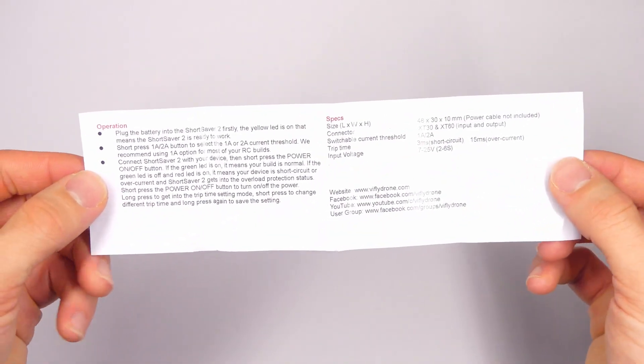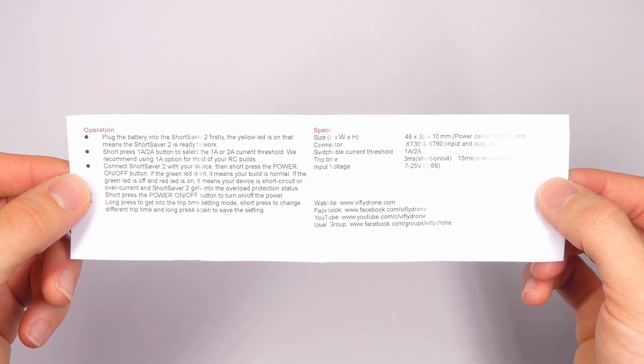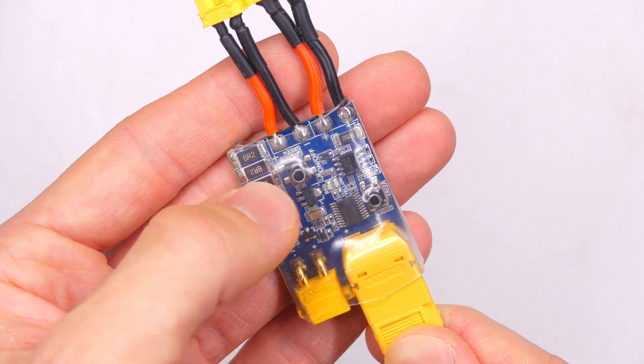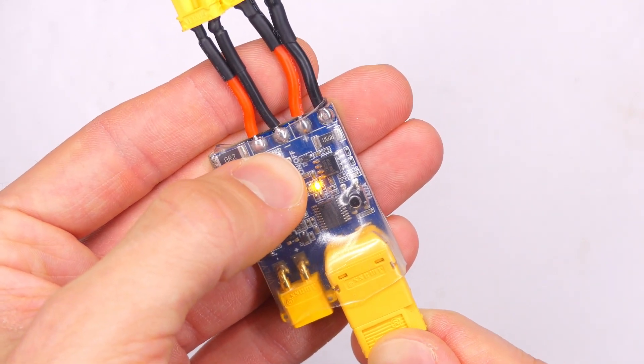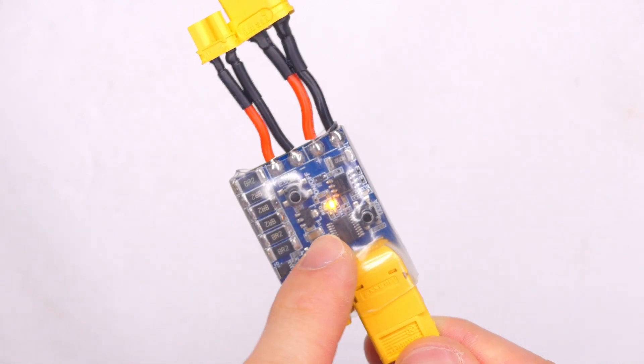And then if you tap it again, then it will go to the longest trip time, basically the longest delay, and then you can just cycle through. Let's take it back to the first one. Press and hold the power switch or the power button, and then it will go back to solid yellow, and you've set the trip time.